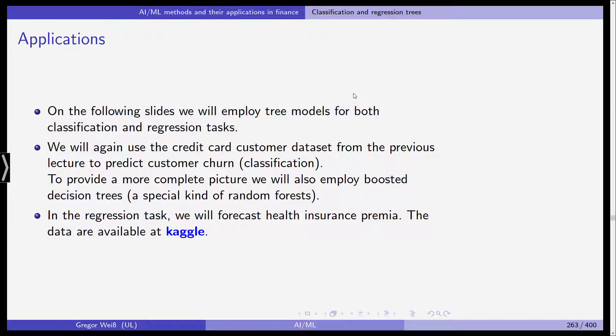We will again use the credit card customer dataset from our previous examples where we saw how it can be used to exemplify classification made by support vector machines and k-nearest neighbor models. We are going to predict customer churn, a classification we want to forecast, the termination of contracts by customers for our credit card company.